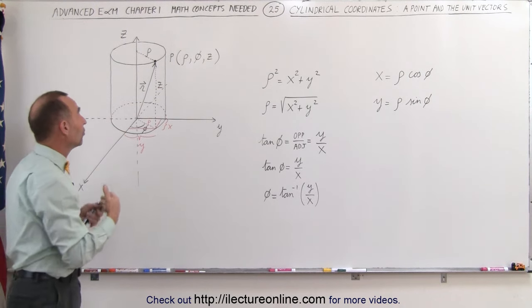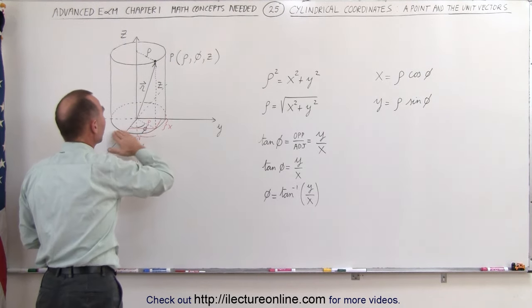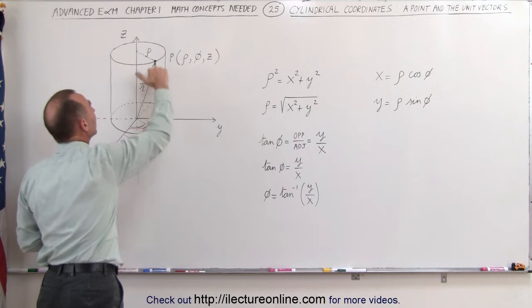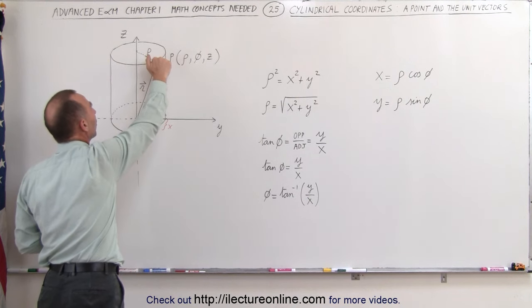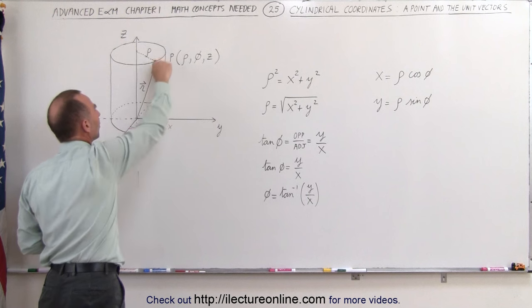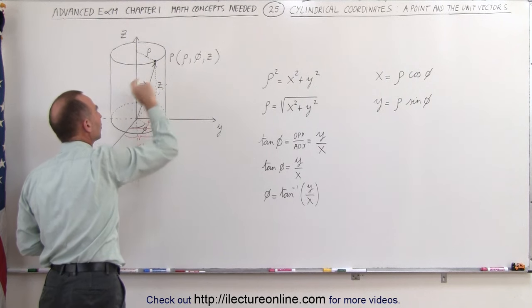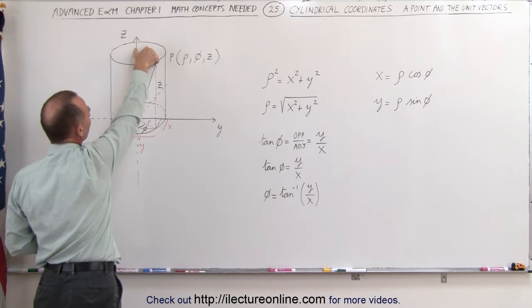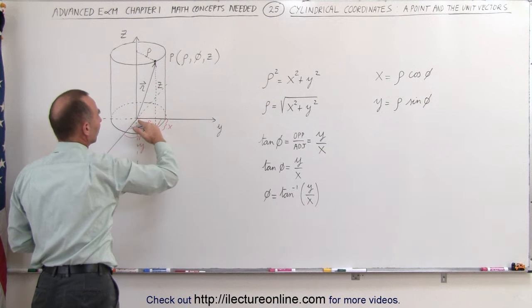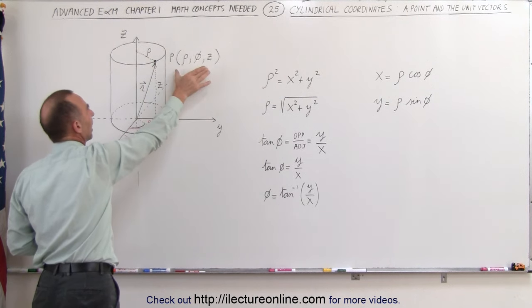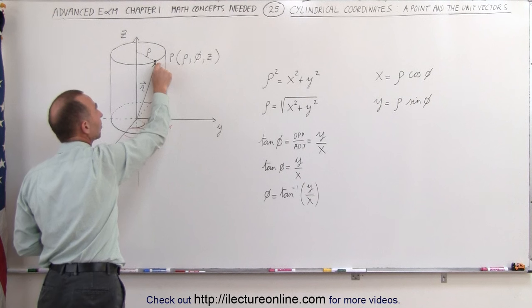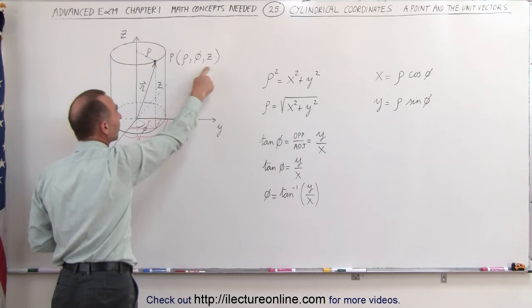And finally, the third coordinate, z, is the distance from the XY plane in the vertical direction to the point of interest. That would be this distance right here. So you can see rho is this, phi is this angle, and z is this distance right there. And that means that this point can then be expressed in terms of rho, phi, and z.